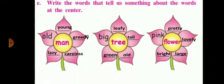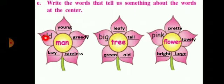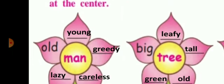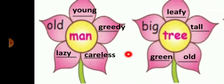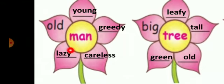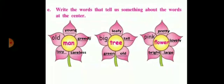Now E number exercise: Write the words that tell us something about the words at the center. The center word is 'man.' You have to write more words related to man. One is given: 'old.' So old man. We can write 'young man,' 'greedy man' — greedy means who wants more and more things, 'careless man' — who is not careful about himself, and 'lazy man.' All these are words which tell something about the man.